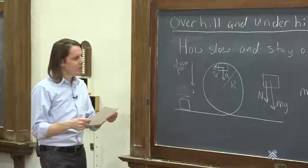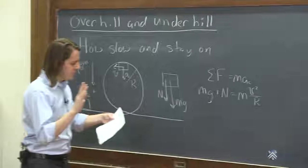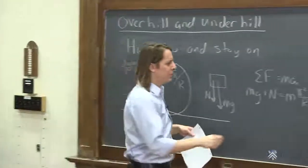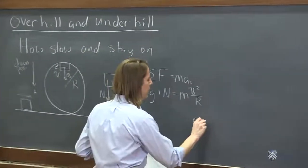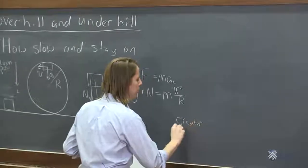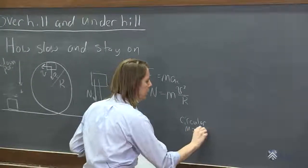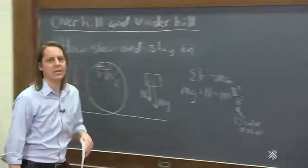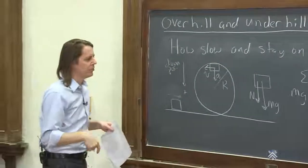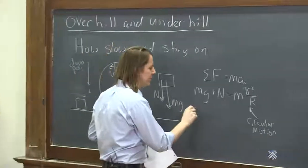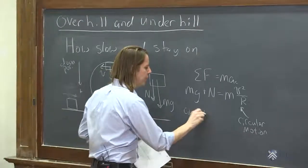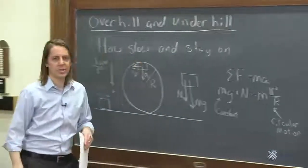All right. So then we look at these terms, and this is where we can kind of try to intuit what's going on. We got this term because it's circular motion. That is just the acceleration you need, and we know it points down towards the center of the circle. This term, though, is constant, mg.